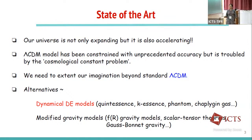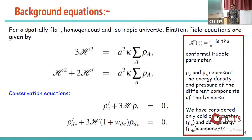The other alternative is modified gravity models, where we actually change the Einstein-Hilbert action to lead to late-time acceleration. In this talk I will be talking mainly about the dynamical dark energy model. If we consider a homogeneous and isotropic universe with a flat spatial section, the Einstein equations can be written in a particular form — expressed in conformal time, where the curly H represents the conformal Hubble parameter.